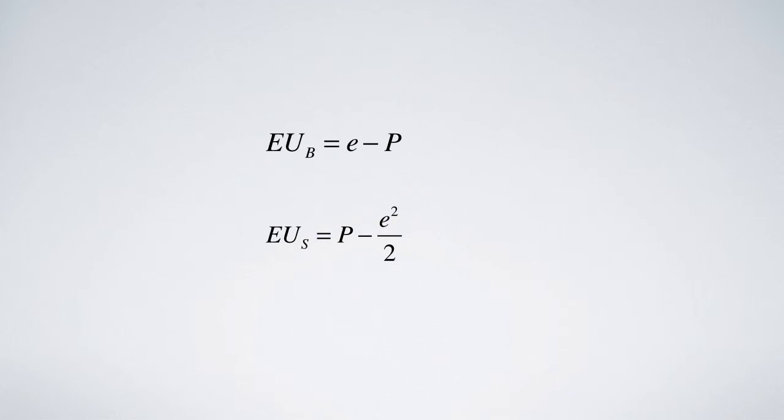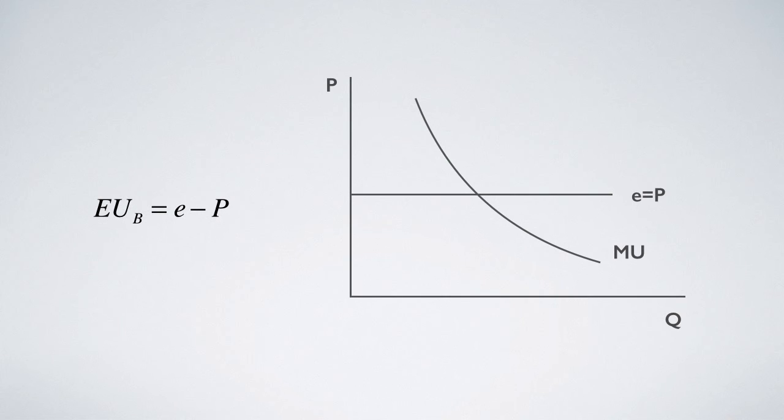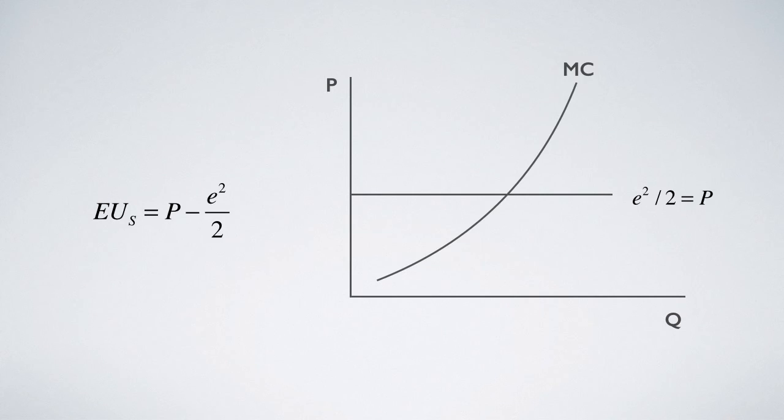However, these two equations are themselves optimal conditions already. The first one equates price with marginal utility, while the second one equates price with marginal cost.